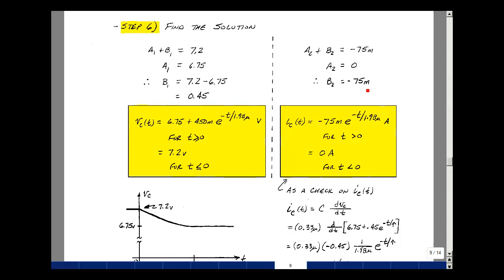Let's solve for the capacitor current. We found that a2 plus b2 was minus 75 milli. a2 was zero, therefore b2 was minus 75 milli. We have a2 plus b2 times e to the minus t over tau minus 75 milli times e to the minus t over 1.98 microseconds, with the units of amps. This is true for t greater than zero, but the capacitor current can change instantaneously. We found that for t less than zero, it was equal to zero. So it goes from zero and jumps to minus 75 milliamps as the switch changes state.